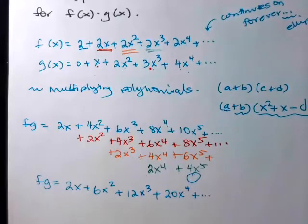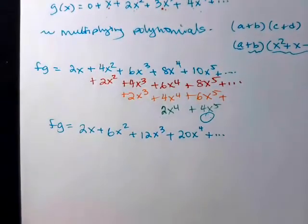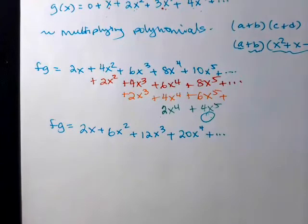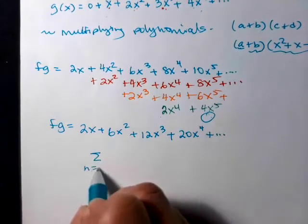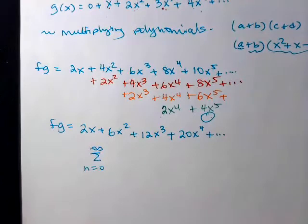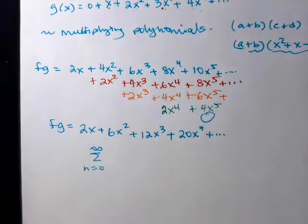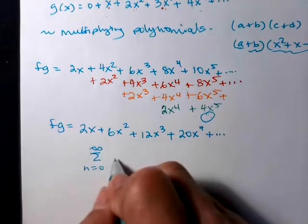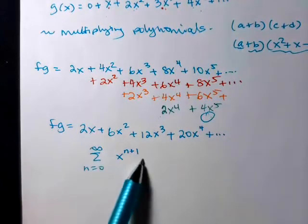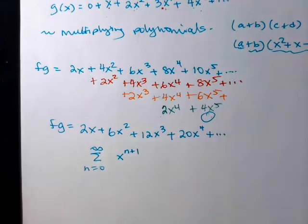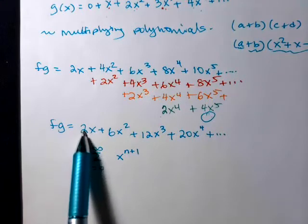Is there a pattern here that we can see? So the series from 0 to infinity because we start where the other two started. Let's do the x's first. That's just going to be x^(n+1). Here's 0, so I'm going to get a 1. So that's good.